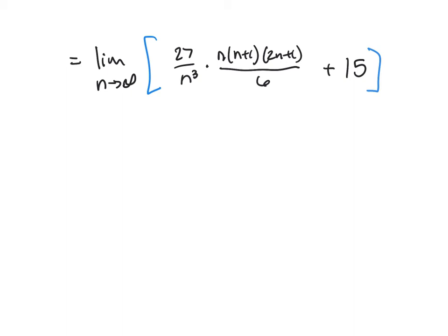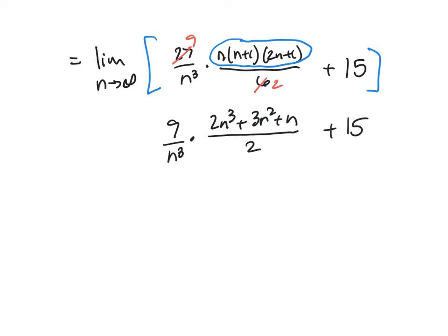Okay, so picking up with our expression here, I want you to notice that we can do a little bit of reducing here. 3 goes into 6, 2 times. 3 goes into 27, 9 times. That just makes the arithmetic a little easier for me mentally. So the other thing you're going to have to do is you're going to have to distribute this multiplication out here. And I've done that ahead of time. And that is 2N cubed plus 3N squared plus N. And then I've got a 2 here on the bottom and I have 9 over N cubed here. I'm going to multiply that out in a second. I think that's a 15 on the end there. I hope it is because I don't feel like redoing this video. Here we go.